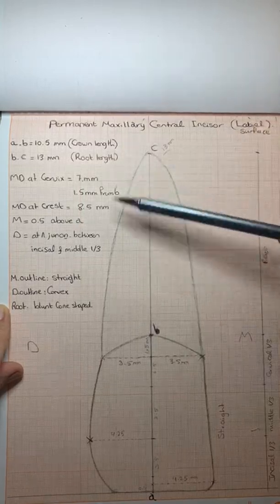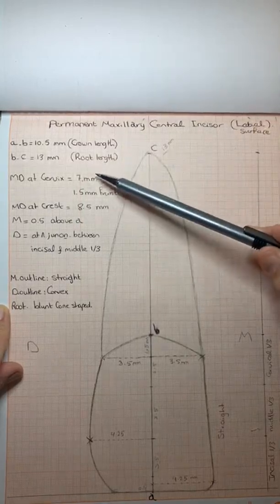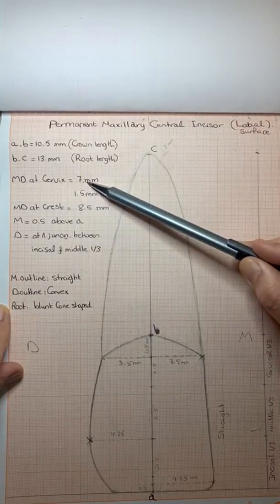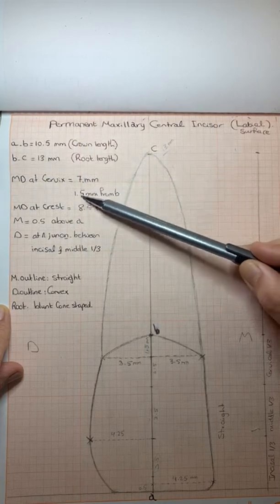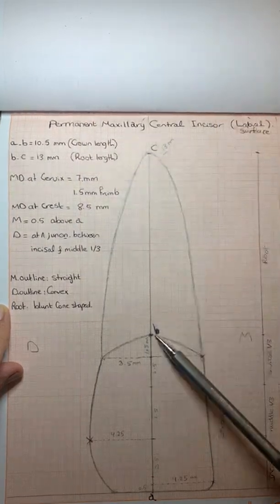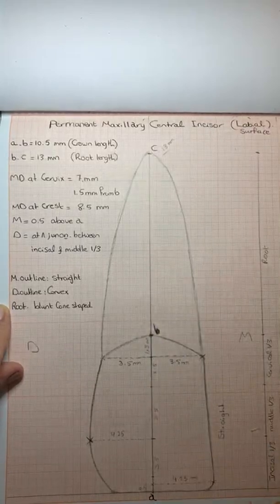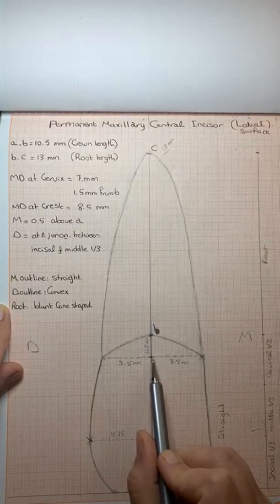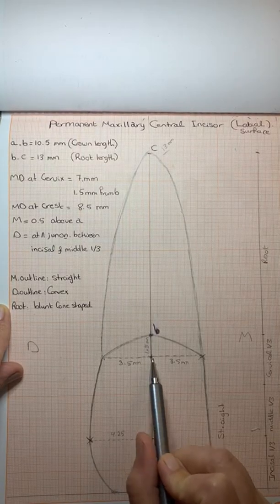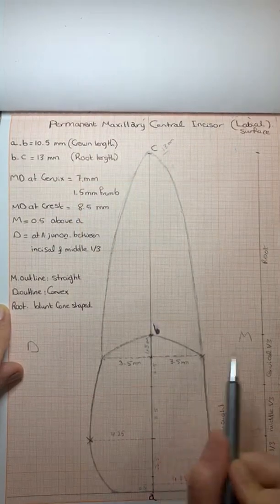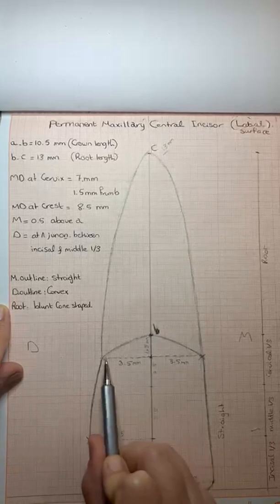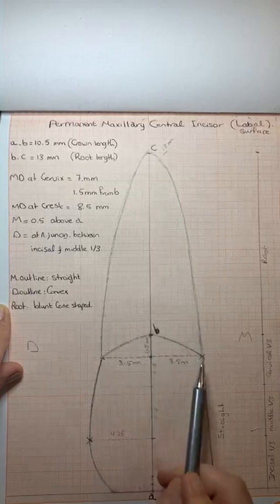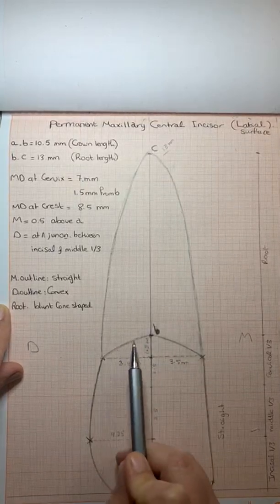The first dimension for the maxillary permanent central incisor on the labial surface is the mesiodistal dimension at the cervix, which is equal to 7 millimeters. It is 1.5 away from B. So from B point, we put this point, which is 1.5 millimeter downward B, which represents the level of the cervical line, and then 3.5 millimeter mesially, and 3.5 millimeter distally. So here is three points that we can draw the cervical line by those points.